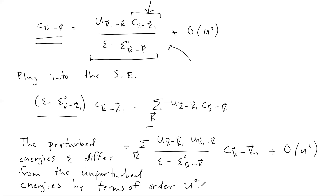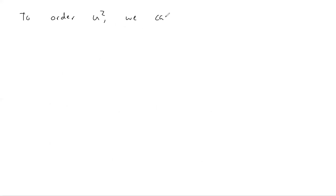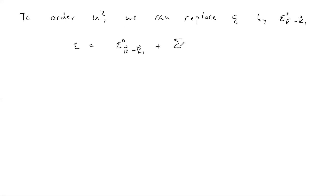In general we expect a small correction in this case, and that's really the message of non-degenerate perturbation theory: the correction to energies in the presence of a weak coupling to a potential, without a degeneracy in the unperturbed spectrum, is of second order in the potential U. Since the correction is of order U², we can replace the perturbed energy by the unperturbed energy in the energy denominator. Cancelling the coefficients C from both sides, our expression for the perturbed energy becomes correct to order U².